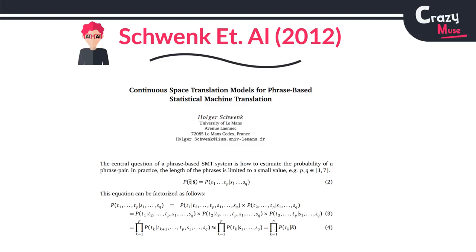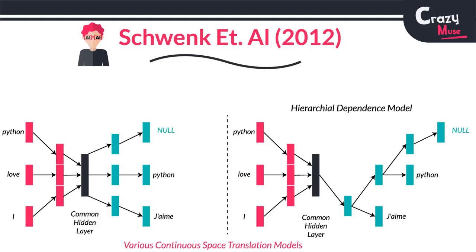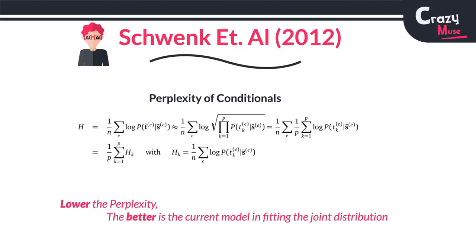The picture starts to evolve with the work of Holger Schwenk in 2012, where he describes neural network based training which has a common hidden representation. This is quite significant from the point of view of laying foundations for encoder-decoder networks. He uses seven words as input and output, plus a null word to accommodate variable-length phrases. They simplify the conditional as shown in the figure and also use multi-phrase perplexity to measure translation performance — for each sentence, this is the geometric mean of target word probabilities conditioned over the source words.